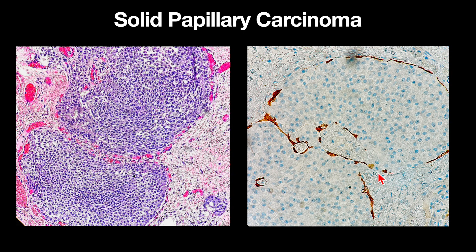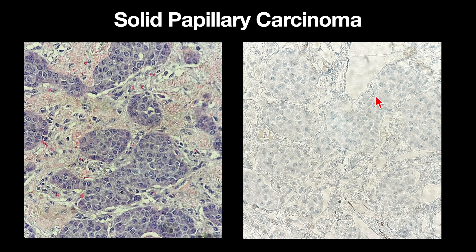Here we see the solid papillary carcinoma where the myoepithelial cells stain the periphery of the lesion and are absent within the lesion itself. Here's another example where you can have lack of myoepithelial cell staining, but this is still staged as pTis as there is no frank invasion. And here you can better appreciate the neuroendocrine quality of the cells.